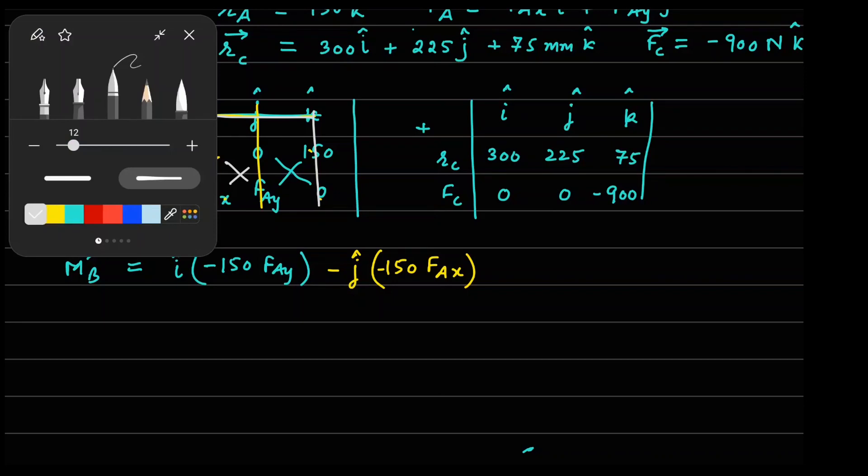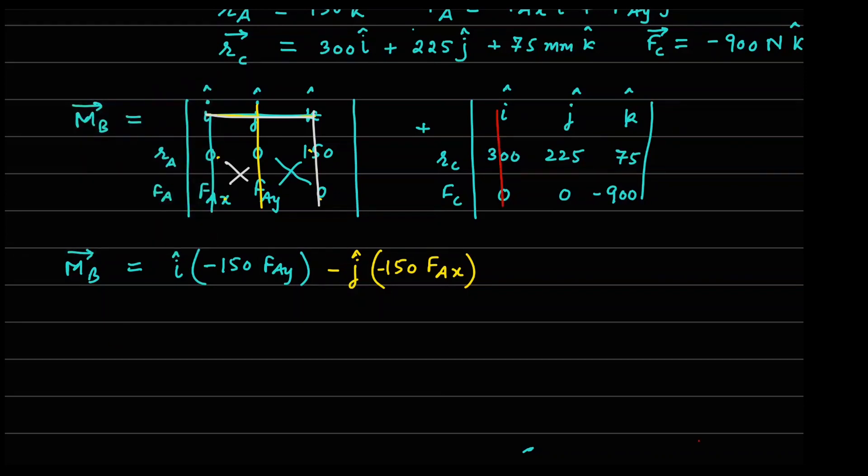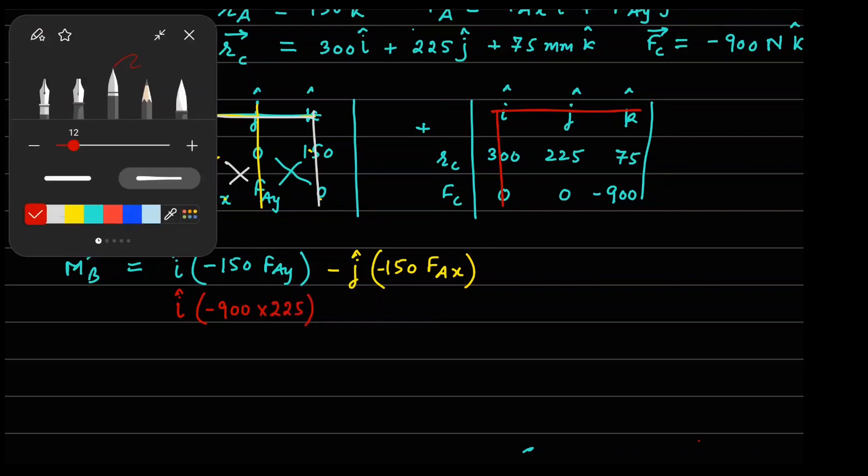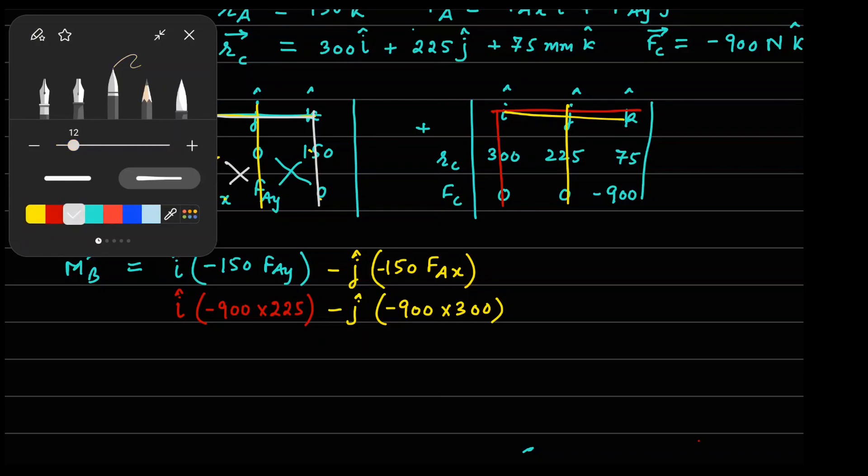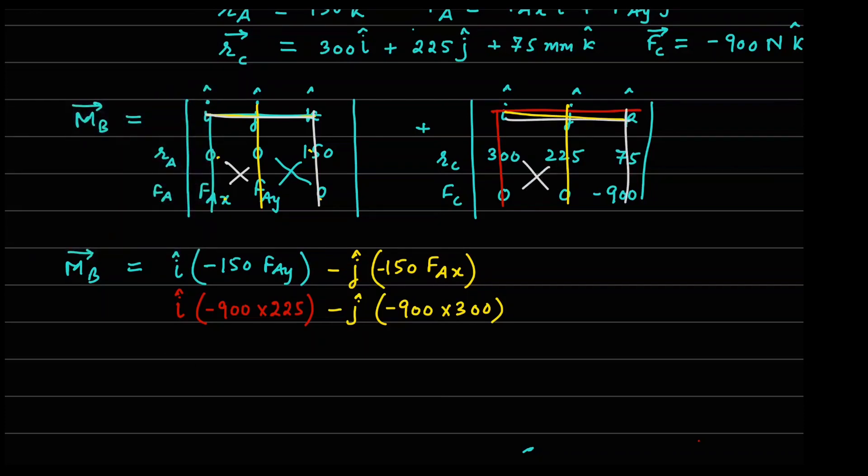Now, if I repeat this calculation for this part here, your i cap there is going to give you minus 900 times 225 j cap. Your j cap is going to give you minus 900 times 300. And again, in this case also, if I go to K cap here, this 2, 0, 0. So there is nothing that comes out there.